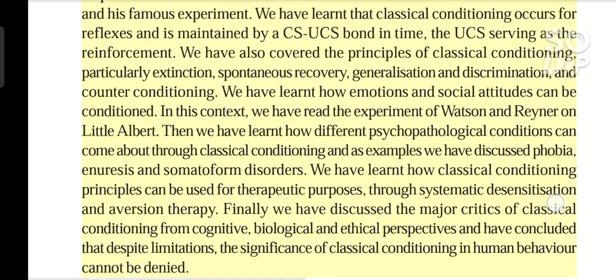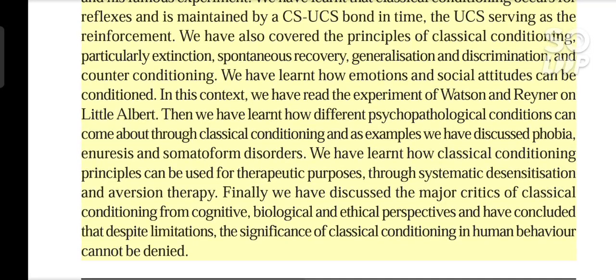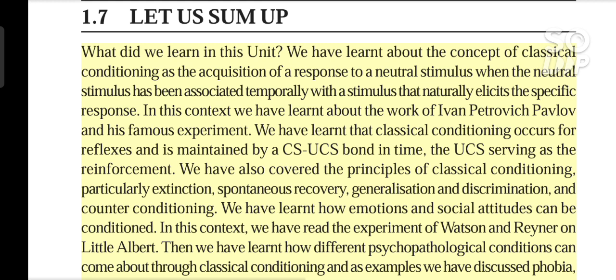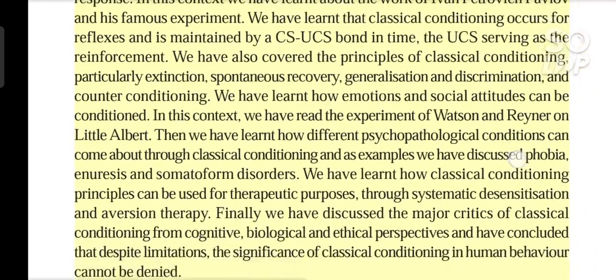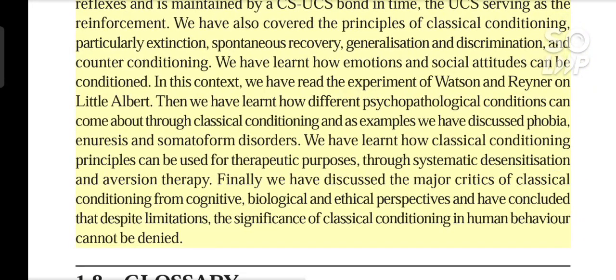We have learned how emotions and social attitudes can be conditioned — in this context we have read the experiment of Watson and Rayner on Little Albert. Then we have learned how different psychopathological conditions can come about through classical conditioning, and as examples we have discussed phobia, enuresis and somatoform disorders. We have learned how classical conditioning principles can be used for therapeutic purposes through systematic desensitization and aversion therapy. Finally, we have discussed the major criticisms of classical conditioning from cognitive, biological and ethical perspectives, and have concluded that despite its limitations, the significance of classical conditioning in human behavior cannot be denied.